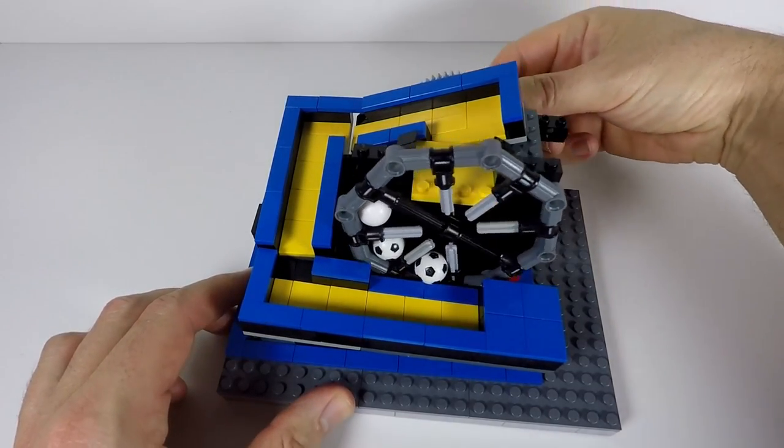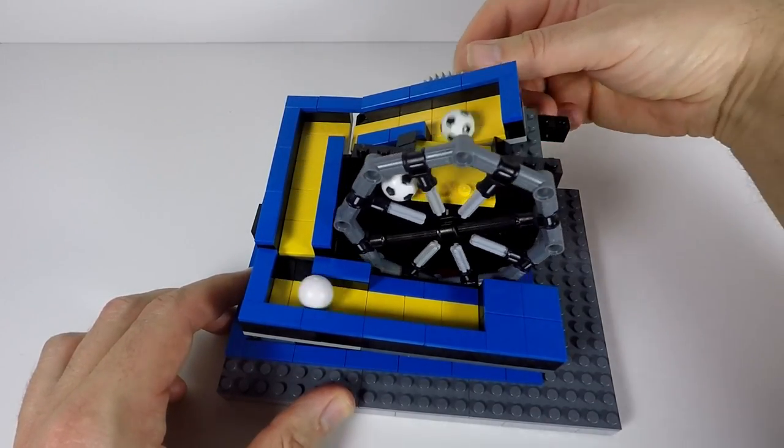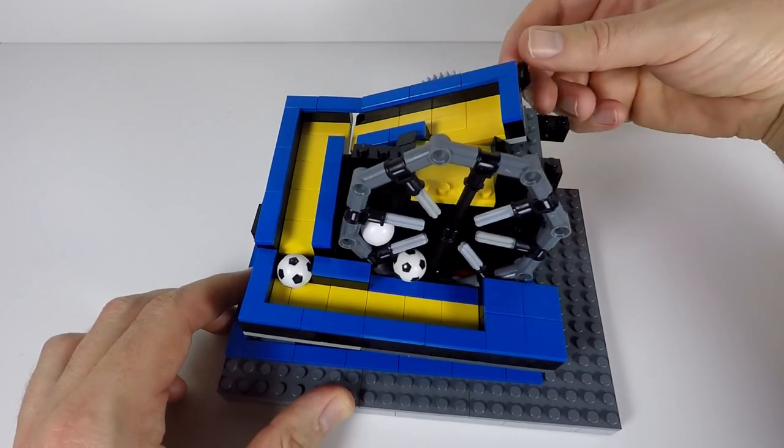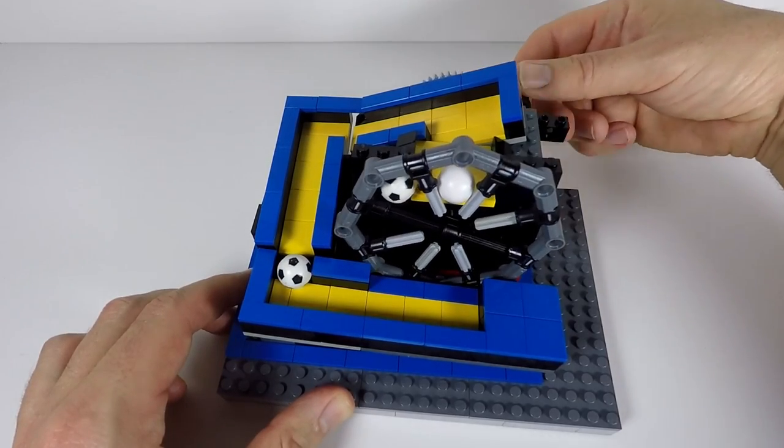So as I turn the little wheel at the back, it actually turns this big wheel at the front and the balls just continue to go around and around.